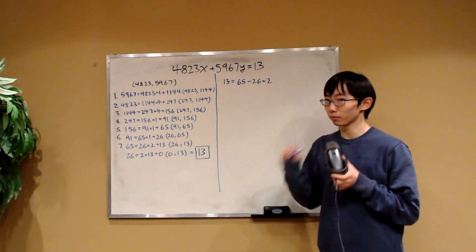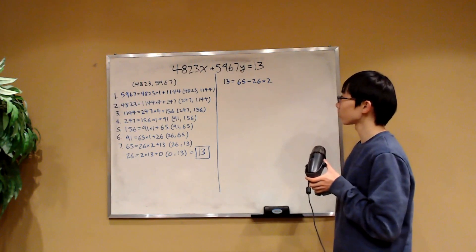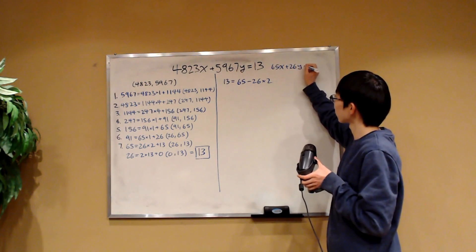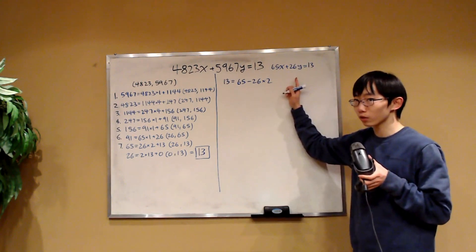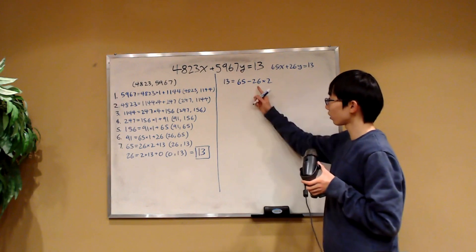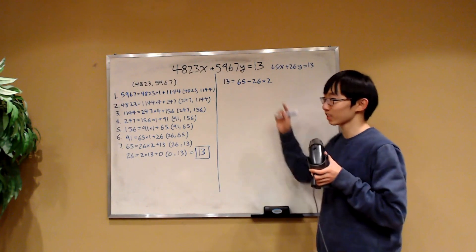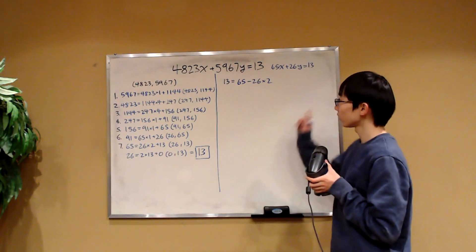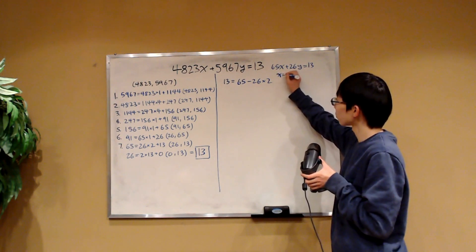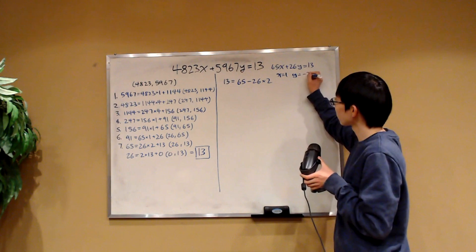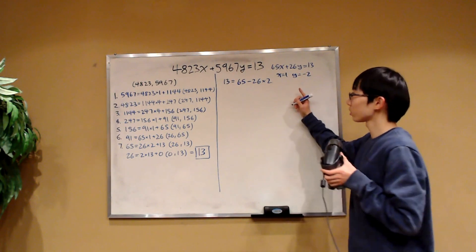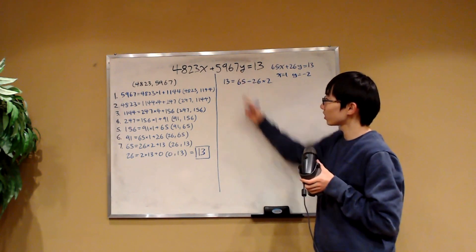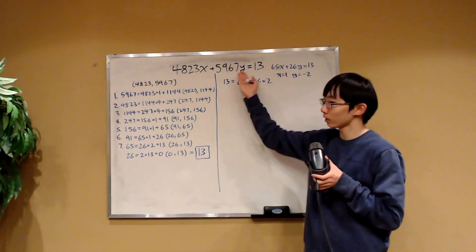Notice: if we were solving the Diophantine equation 65x + 26y = 13, we would have already found a solution, because this expression tells us x = 1 and y = −2 is such a solution. But we want to solve the original equation, so we need to build off of this by rewriting 65 and 26 in terms of larger numbers.